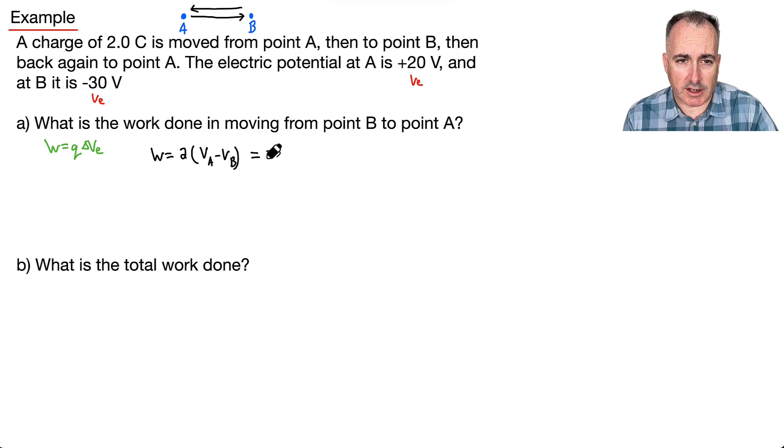In this case right here, I get 2 times, and let's see, VA is plus 20. I have to do minus, and this is a minus 30. So that was the only kind of slightly sneaky part, just being really careful with your units here and with your signs. Well, 20 minus minus 30 is 20 plus 30, which is 50. And 2 times 50 is 100. So that means the work done is just going to be 100 joules, and we're done.